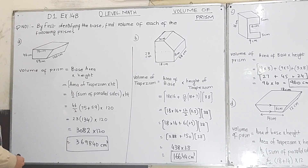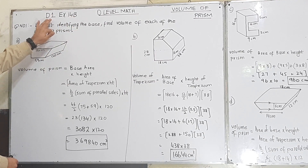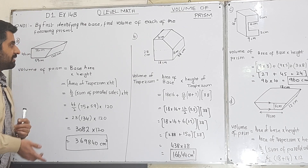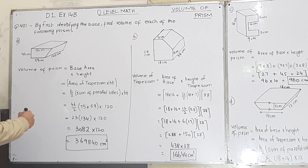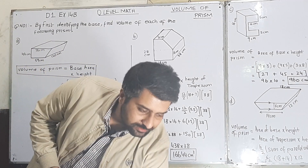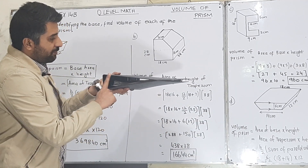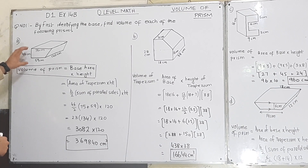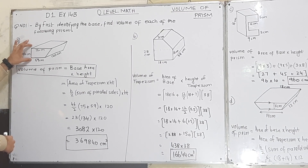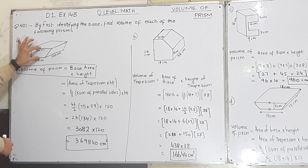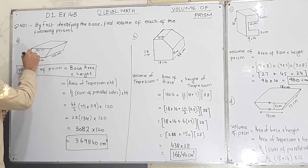Question number 1, part A from exercise 14B, D1 O-level math — volume of prism. This shape is given and it is a prism. In a prism you need to identify the base first. The volume of a prism equals base area multiplied by height — you multiply the area of the base of the prism by its height to get the volume. In this case the base is a trapezium.